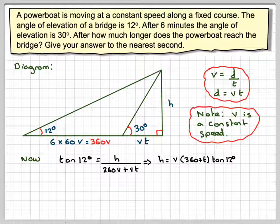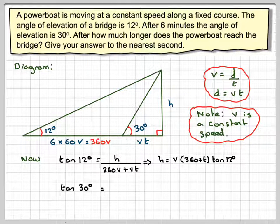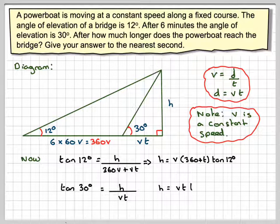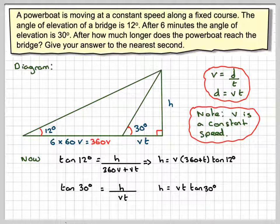Using the smaller triangle here, we can say that tan 30° is equal to h over vt, which means that h is vt tan 30 degrees.